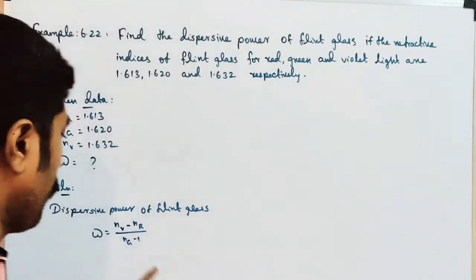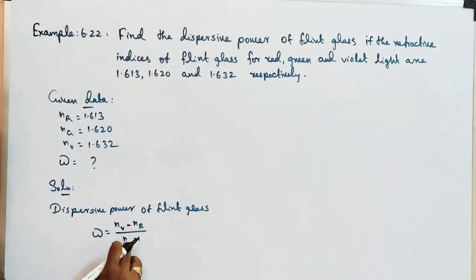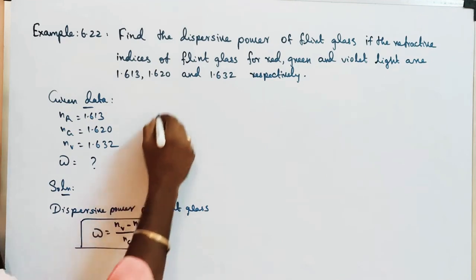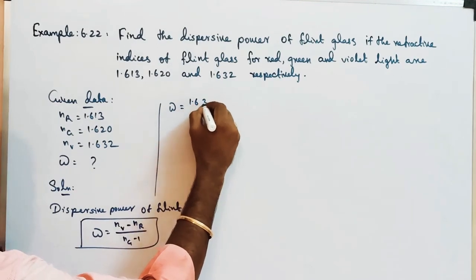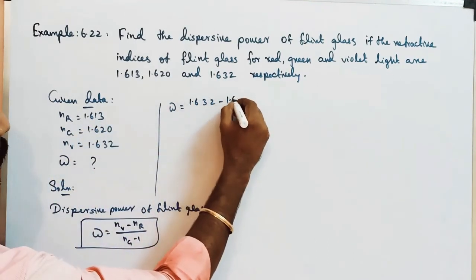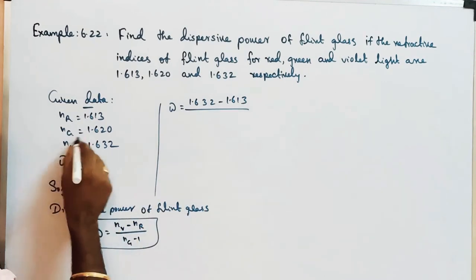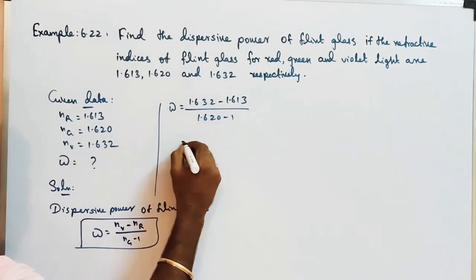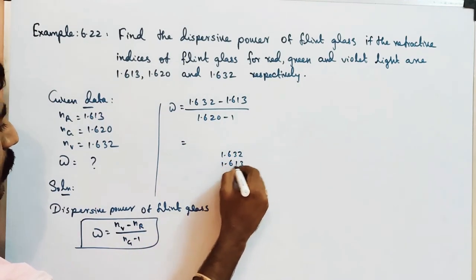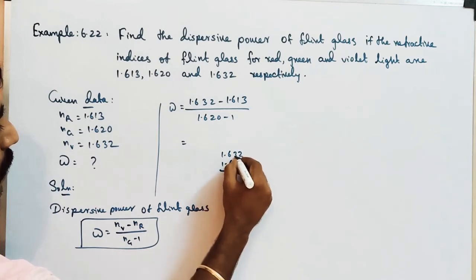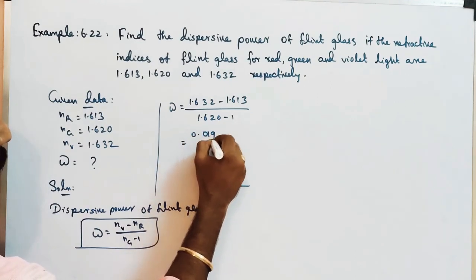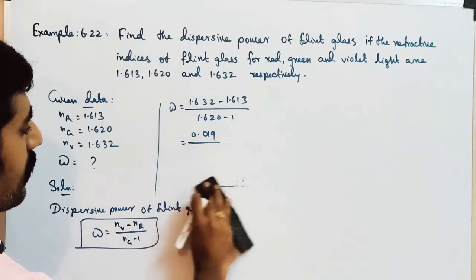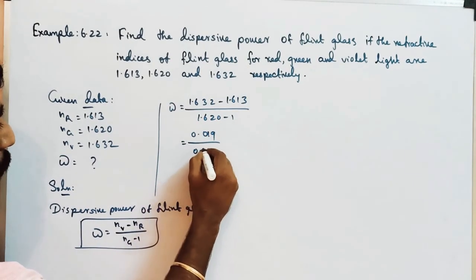Our formula is: dispersive power equals NV minus NR divided by NG minus 1. Substituting values: dispersive power is equal to NV value 1.632 minus NR value 1.613, divided by NG 1.620 minus 1. So 1.632 minus 1.613 gives 0.019, divided by 1.620 minus 1, which is 0.620.